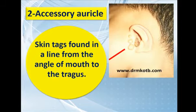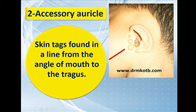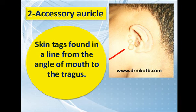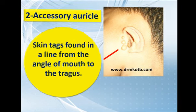The second congenital condition is the accessory auricle. These are skin tags that can contain cartilage inside. They can be found along a line drawn from the tragus of the auricle to the angle of the mouth. They cause only disfigurement and should be left alone unless the patient is complaining of the cosmetic appearance.